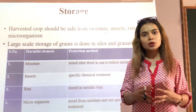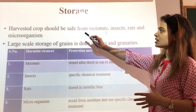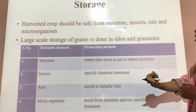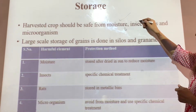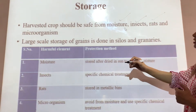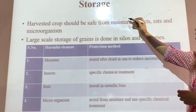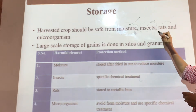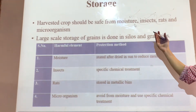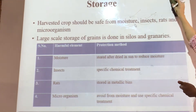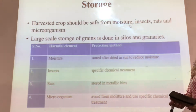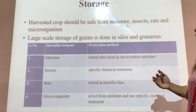The harvested crop should be safe from moisture, insects, rats, and microorganisms — these are all factors which can affect our crops. So we have to store the crop properly to keep it safe from these harmful elements. Let us discuss these harmful elements one by one.